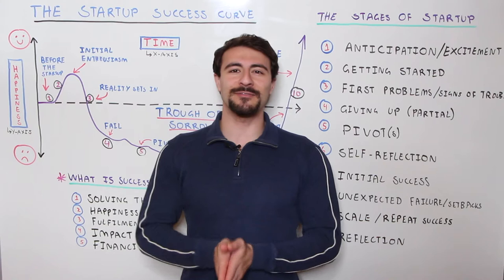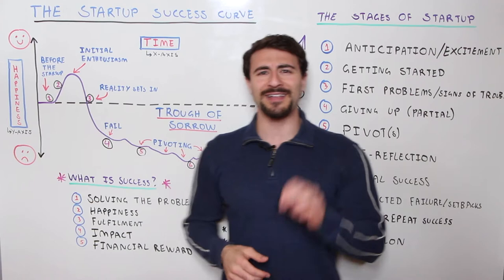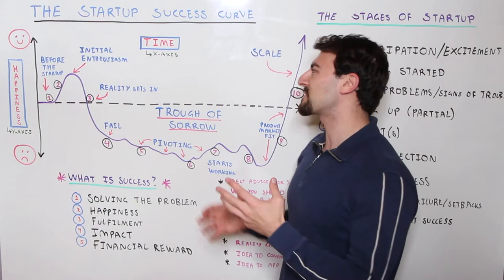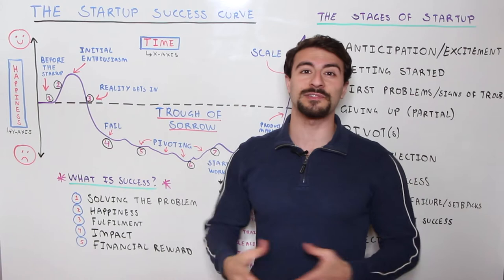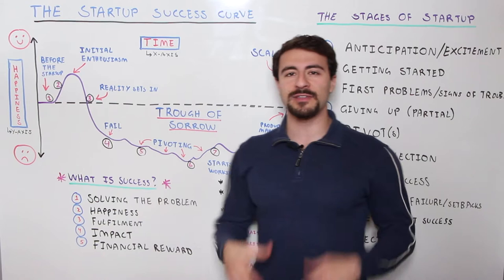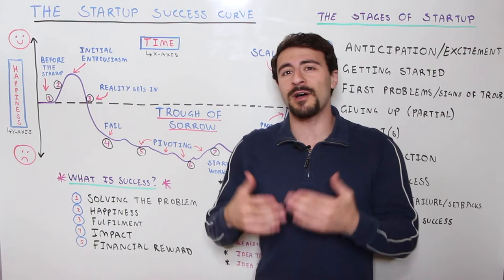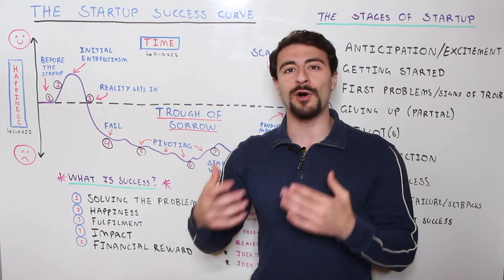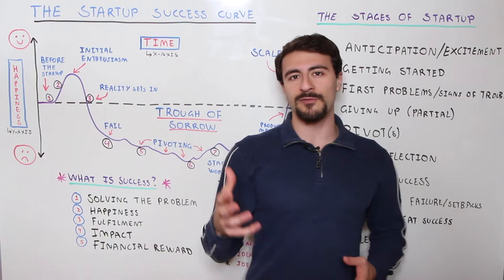Let's get started by defining success. When we talk about the startup success curve, people often ask how do you define success. From my perspective, working with different entrepreneurs and seeing the landscape, there are really five main motivators. The first way people define success is by solving the problem. If you're an entrepreneur, you started the company most likely to solve a very specific problem you saw in the market or experienced personally, and you define success by your ability to solve that problem at scale.